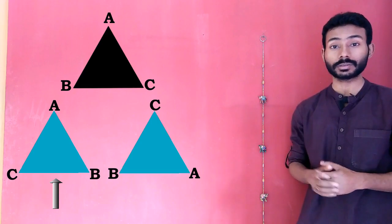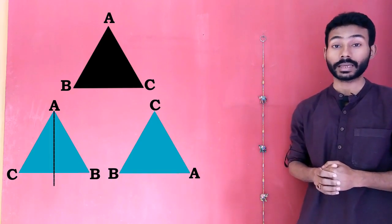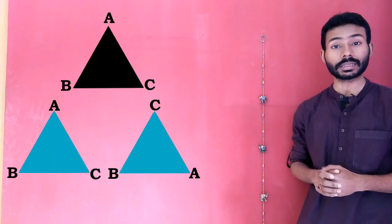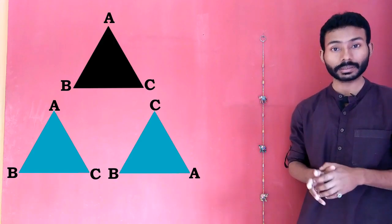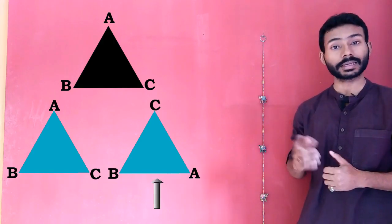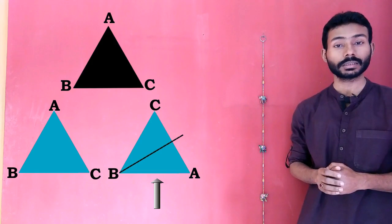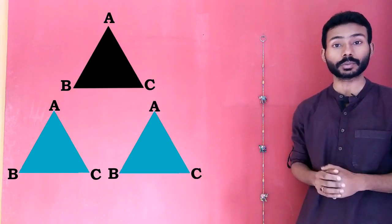If we flip the first triangle again about the same axis of symmetry, we end up getting the same triangle ABC that we started with. Similarly, if we flip the second triangle again about the same axis of symmetry, we end up getting the same triangle ABC that we started with.